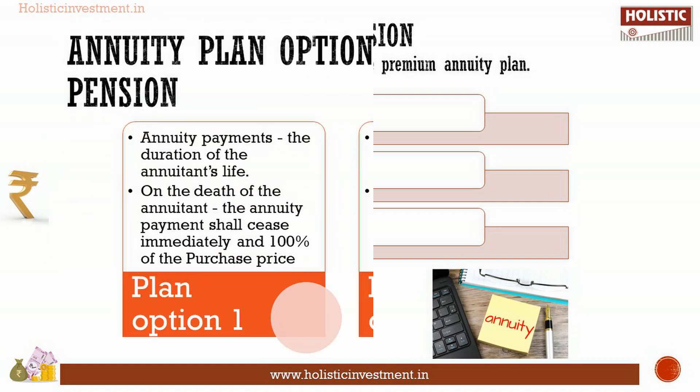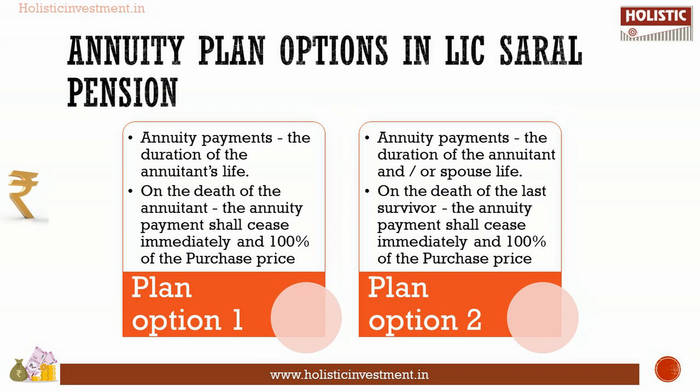Under Option 1, as long as the annuitant is alive, he receives the annuity, and on death, the purchase price is returned. Under Option 2, the annuity is payable as long as the annuitant or spouse is alive. On the death of the last survivor, the purchase price is returned.